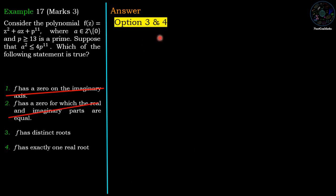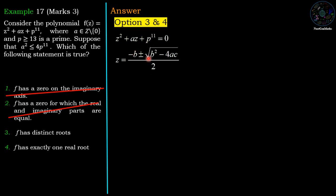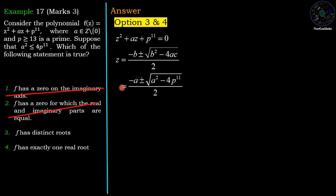Now we check options 3 and 4 simultaneously. For the quadratic z² + az + p¹¹ = 0, the roots are given by the quadratic formula: z = (−a ± √(a² − 4p¹¹)) / 2. Since we are given a² = 4p¹¹, we have a² − 4p¹¹ ≤ 0, giving two possibilities: the discriminant equals zero, or it is less than zero.